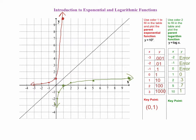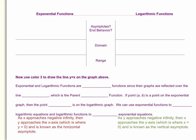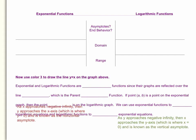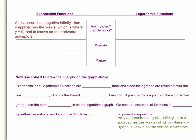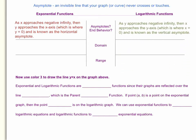Now let's take a look at some of the characteristics of exponential and log functions. When looking at the graph of the exponential function, you will notice that as x approaches negative infinity, y approaches the x-axis, which is where y equals zero. This is also known as the horizontal asymptote. An asymptote is an invisible line that your graph or curve never crosses or touches. Asymptotes can be vertical or horizontal. Now looking at the graph of the logarithmic function, as y approaches negative infinity, x approaches the y-axis, which is where x equals zero, and is known as the vertical asymptote.